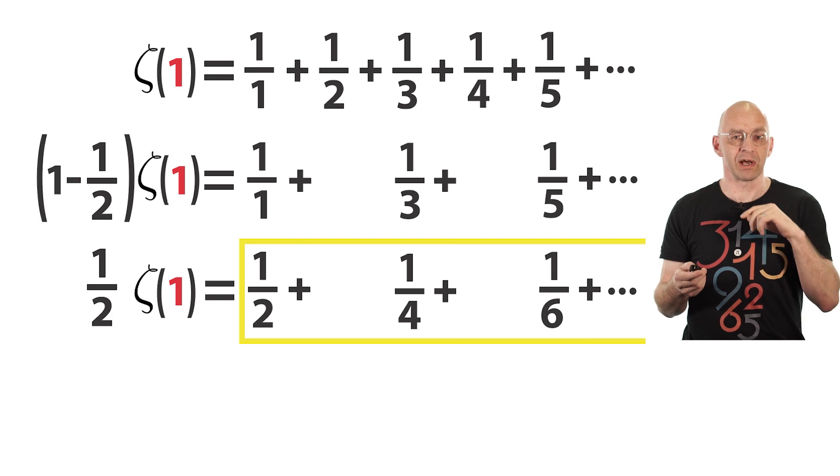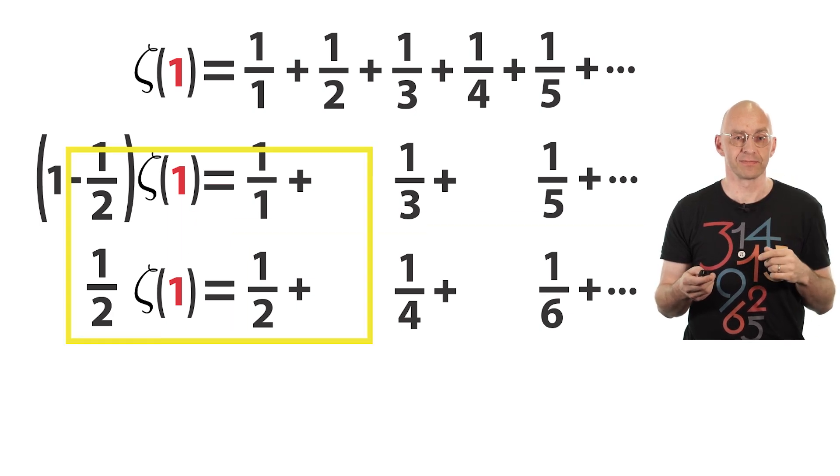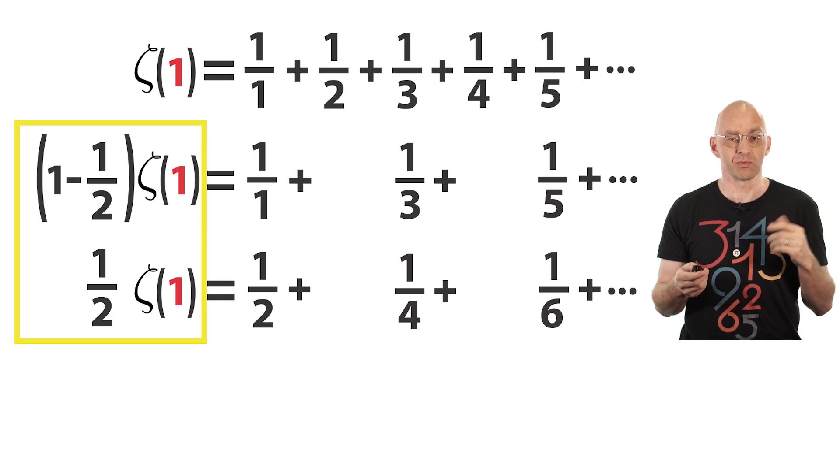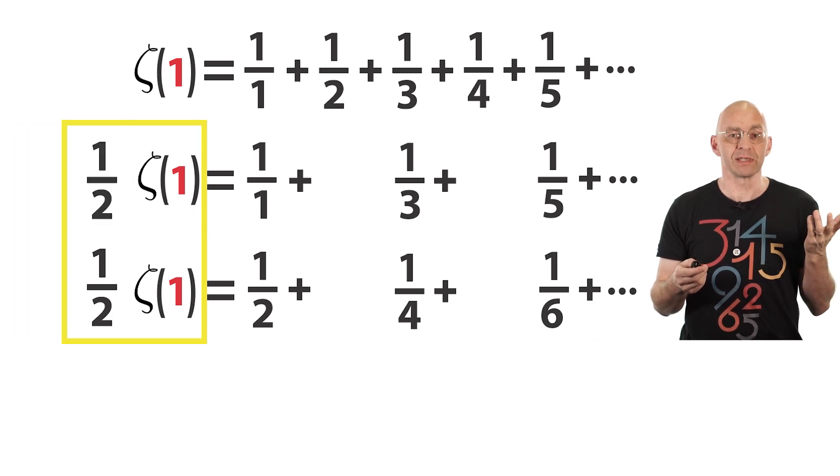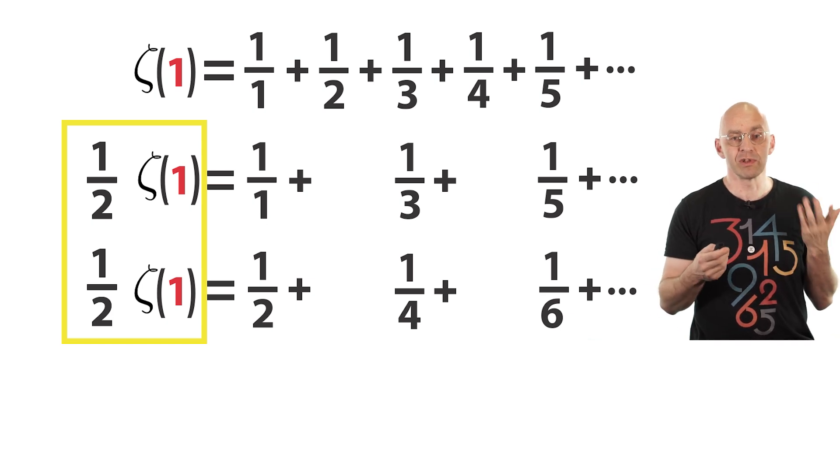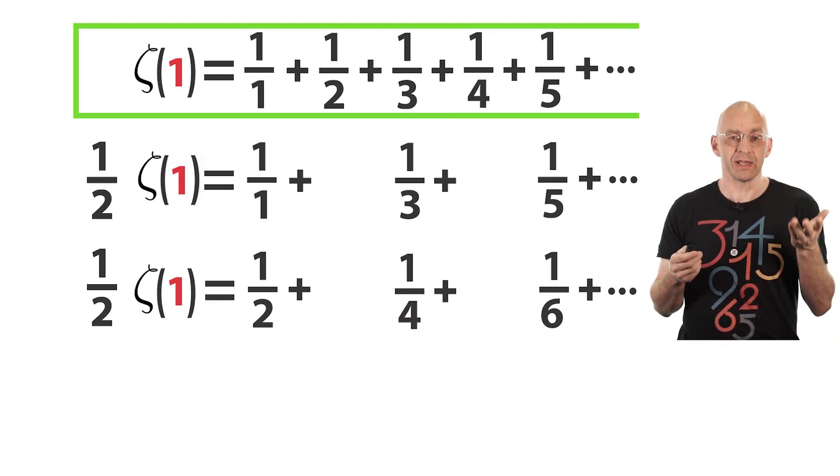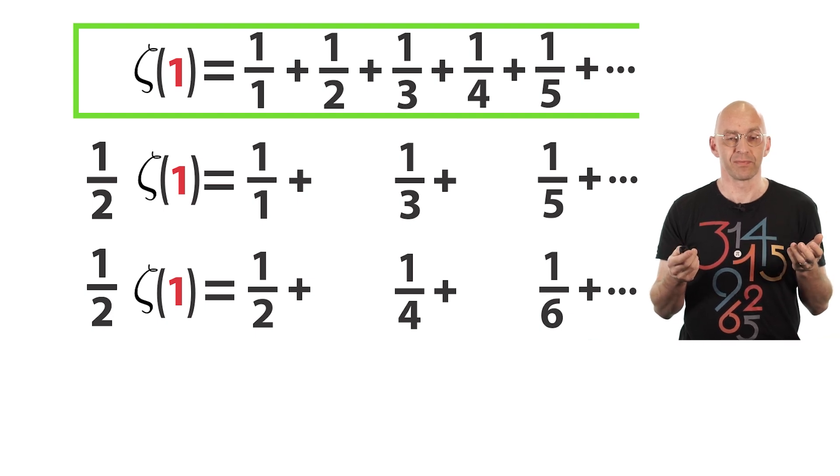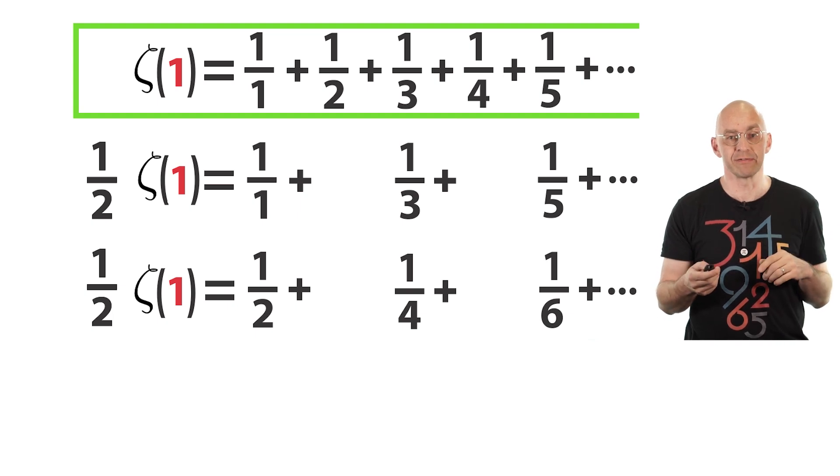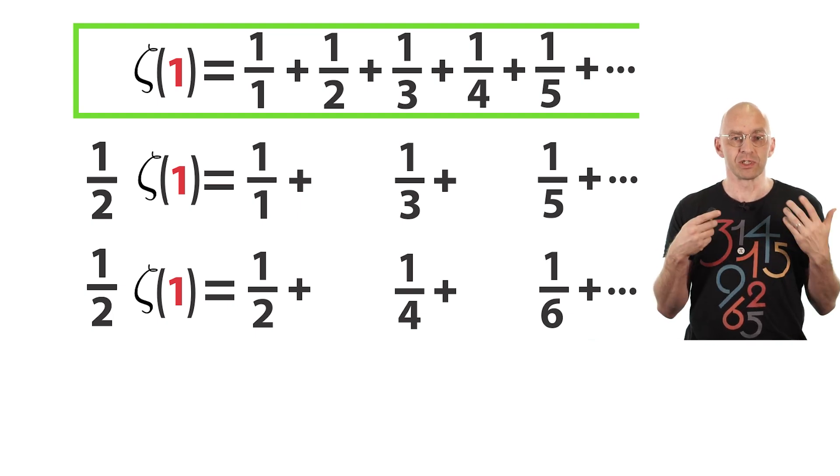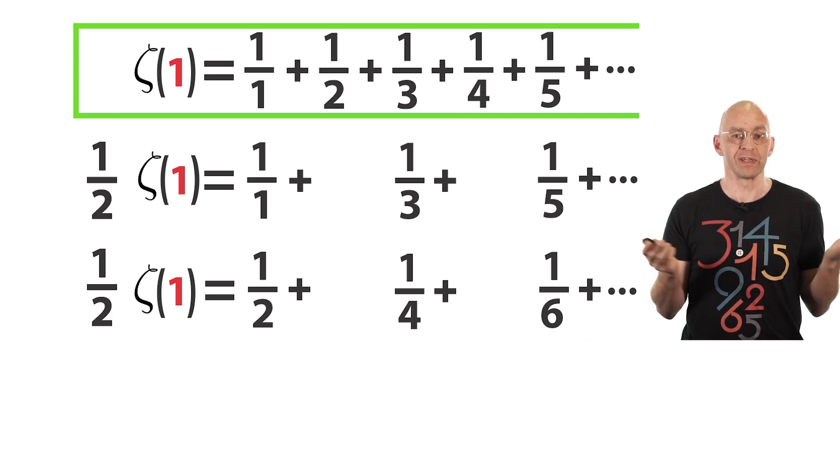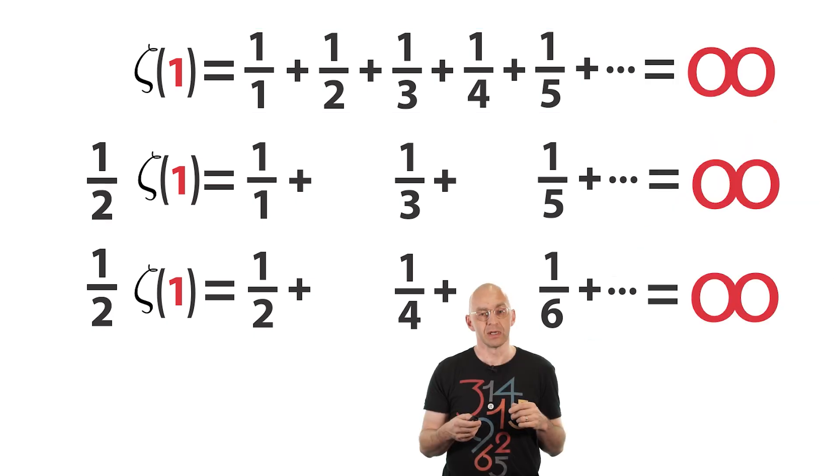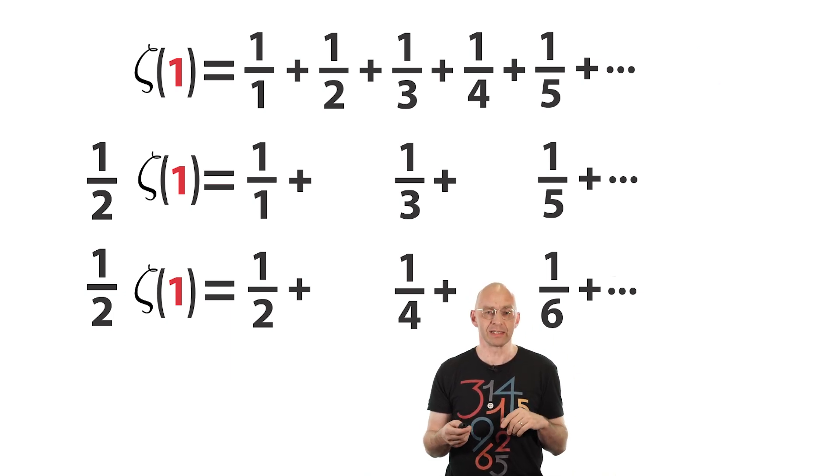However, this contradicts what we get out of the left sides. Here we've got 1 minus 1 half, which is 1 half, which means that the sums should be equal. So what that means is that our assumption that our original sum is finite implies a contradiction. And this means that our assumption was wrong, and that therefore the sum has to be infinite. In fact, from what we just said, it follows that all three sums have to be infinite. Anyway, for later, just remember that zeta evaluated at 1 equals infinity.